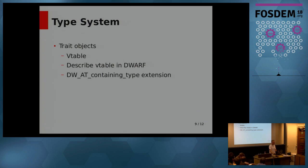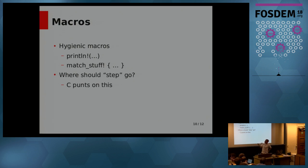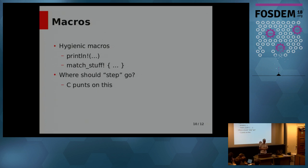Rust has a hygienic macro system. They use exclamation points to tell you it's a macro, so if you read some kinds of Rust code it just looks like a lot of shouting. As an aside, I feel like programming languages of the future should be written in uppercase — back to the Fortran days. I keep trying to propose that all keywords should be emojis, but no one in the Rust world takes me seriously.